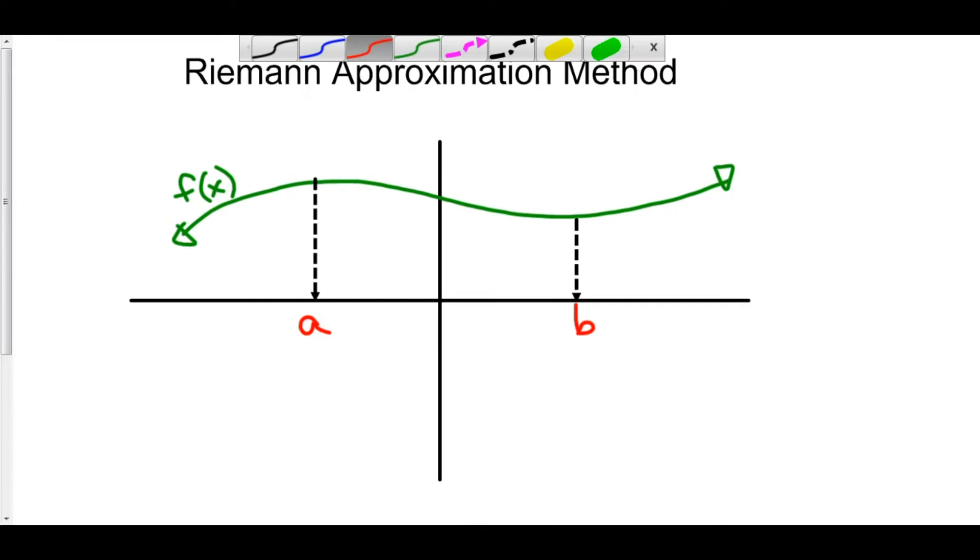What he did is he said, hey, check this out. We can make a rectangle from a on over. And we'll call this some distance x. We can use the exact same distance x to make yet another rectangle from the curve. We can use the exact same distance x to make another rectangle.